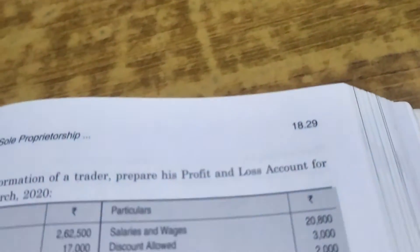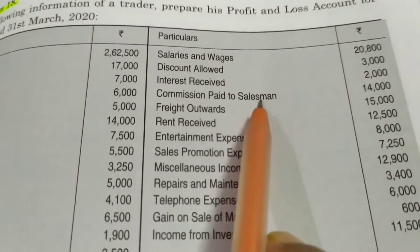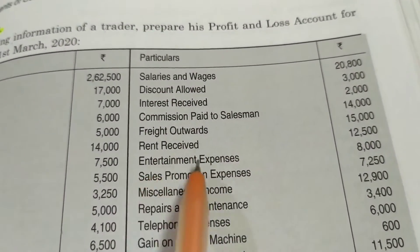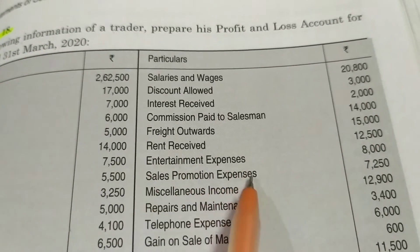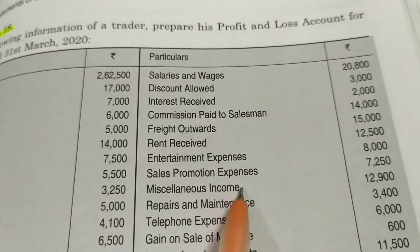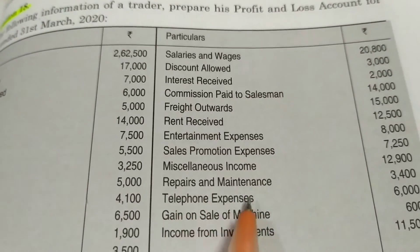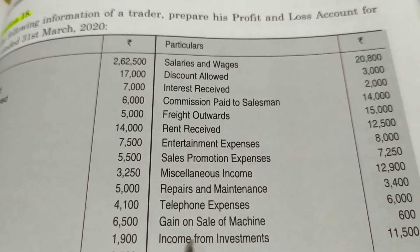Continuing: salary and wages — indirect expense; discount allowed — expense; interest received — income; commission paid to salesman — expense; freight outward — expense; rent received — income; entertainment — expense; sales promotion — expense; miscellaneous income — income; repair and maintenance — expense; telephone expense — indirect expense; income from investment — income.